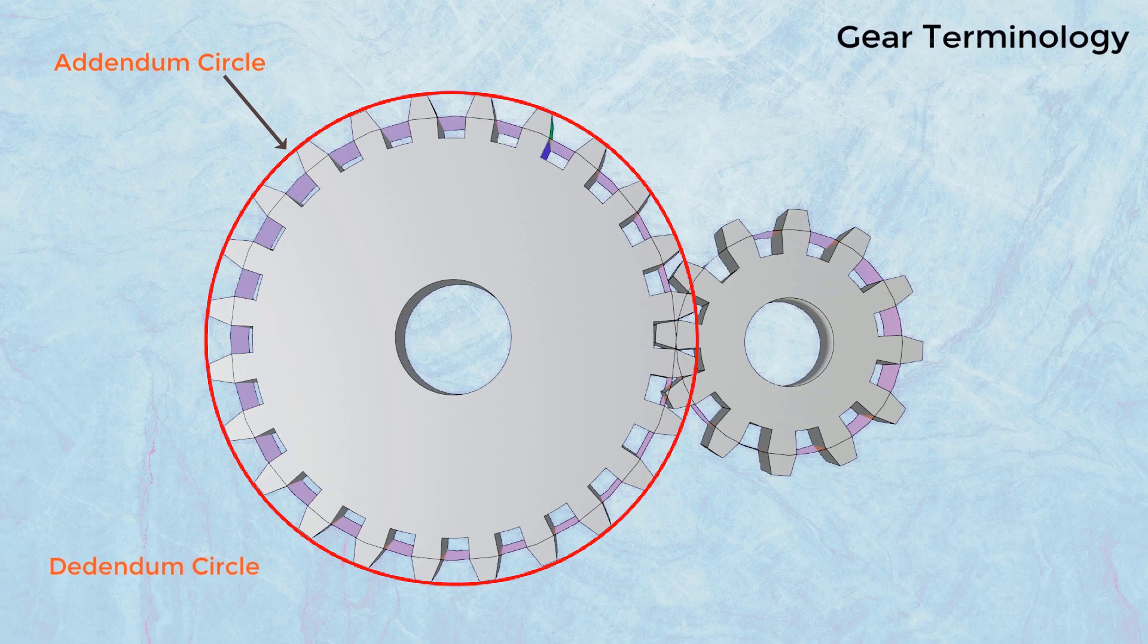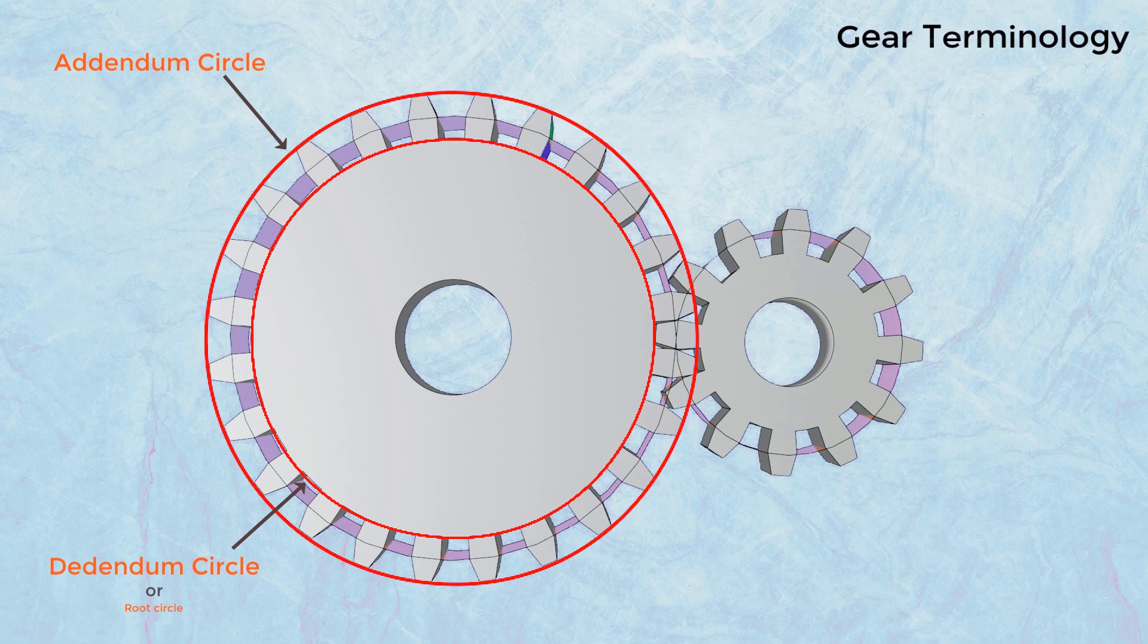Dedendum Circle: The circle drawn through the bottom of the teeth is called the dedendum circle. It is also called the root circle.